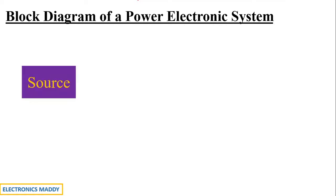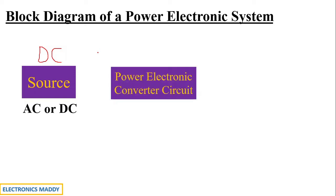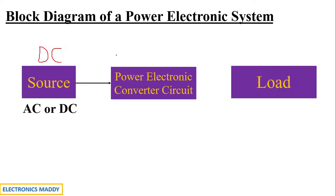Any power electronics system will basically have a source. And when we talk about source, it can be either AC or DC. For example, if you're considering it to be equal to a DC source over here, this DC needs to be converted to AC. If that is the requirement, then we need a power electronic converter circuit to do that. So the DC will be converted to AC with the help of a power electronic converter circuit, and in turn, we will be having AC output at this point in time.